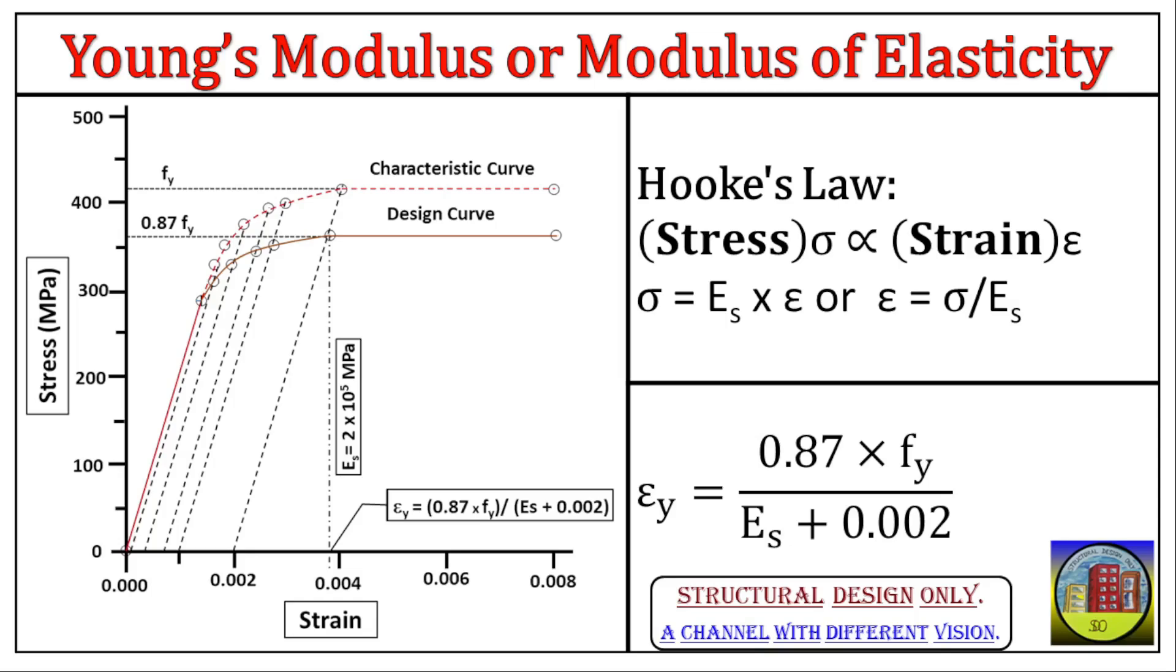0.87, factor - this is a constant value, typically around 0.87. It considers various factors that influence how steel stretches in real-world situations. This factor helps refine the calculation for a more accurate prediction of strain.